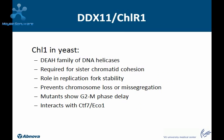So what is known about the function of DDX-11 protein? The knowledge about DDX-11 mainly comes from studies in yeast, in which the protein is called CHL1. It is a DNA helicase belonging to the family of DEAH helicases. Studies with CHL1 mutants showed that the protein is required for sister chromatid cohesion and replication fork stability. It prevents chromosome loss or missegregation, and these mutants showed G2/M phase delay. Also, an interaction with CTF7 or ECO1 was found.